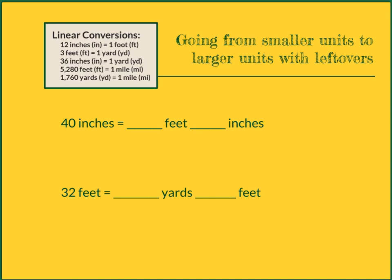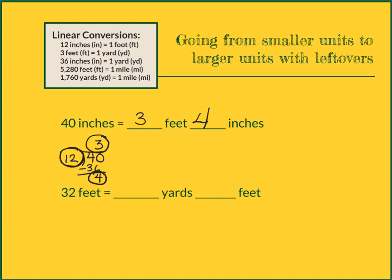Here we're going from smaller units to larger units, but again with a little messiness involved. Starting with 40 inches and going to feet — I have a spot for inches left over. Seeing how many feet I can get out of 40 inches, I divide 40 by 12, because there are 12 inches in each foot. I can get 3 groups of 12 out of 40, with a remainder of 4. That means I will have 3 whole feet, and the remainder of 4 tells me how many inches I have left over. My answer is 3 feet 4 inches.